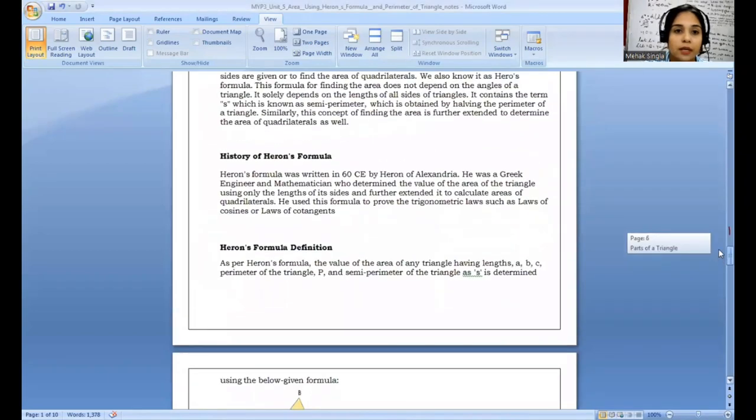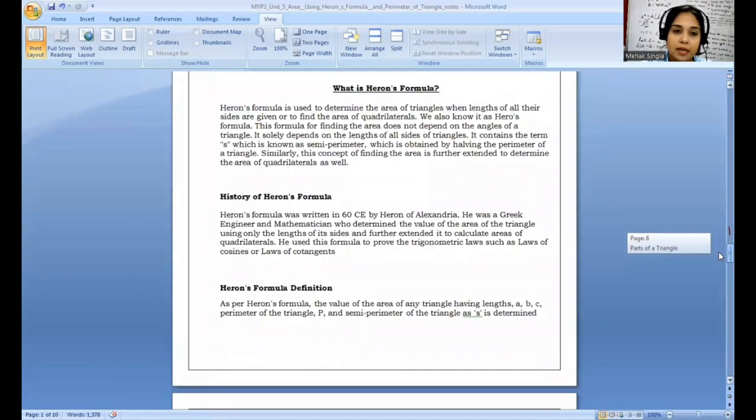Heron's formula here. Who discovered this Heron's formula? What is this formula and what was the history of Heron's formula? Heron's formula was actually written in 60 CE by Heron of Alexandria. He was a Greek engineer and mathematician as well. He discovered the value of the area of the triangle using the lengths of the sides.